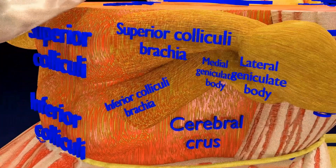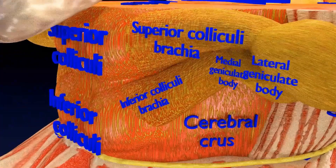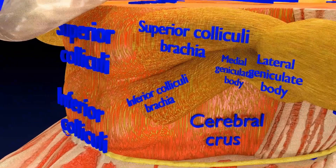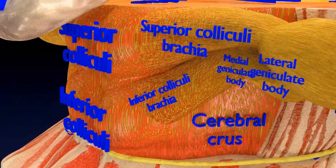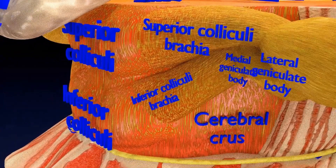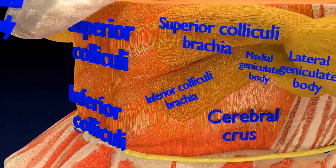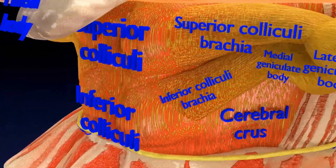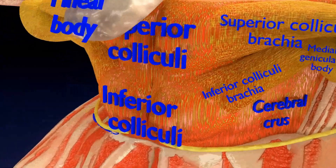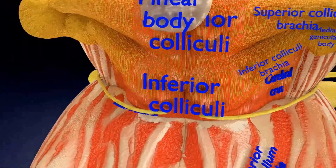The medial geniculate body is the thalamic processing center of the auditory pathway. It has projections to and from the inferior colliculus, the auditory cortex, and the thalamic reticular nucleus or TRN.